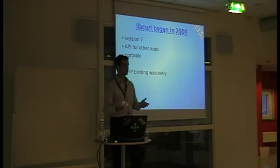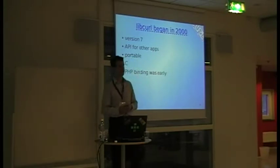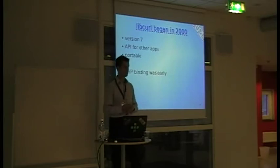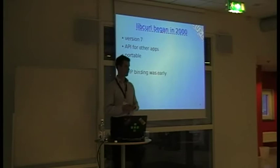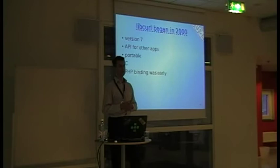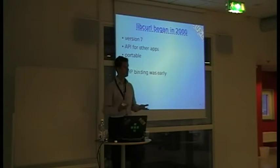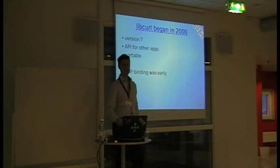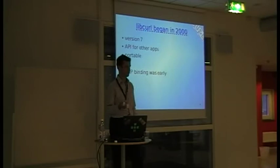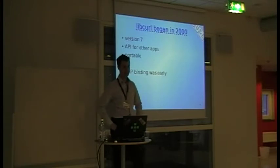I wrote curl, people started to use it, and then I thought this is a lot of protocol transfer stuff - it's useful for other applications as well. So we should write a library out of this so curl could use the library and other applications could also use it. I started working on this in 2000 and we were already at version 7, and we're still at version 7 actually. So we created an API for applications - kind of unorthodox API but still. I wanted it to be portable, written in C because C is my primary language. The PHP binding deserves a mention because they were very early with their use of libcurl, so they kind of helped me.